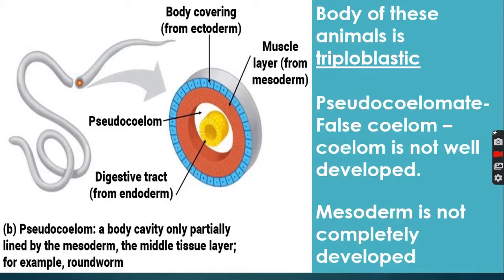Their body is triploblastic — we can see three germ layers: ectoderm, endoderm, and mesoderm. But the special feature here is that the mesoderm is not well developed. Therefore they have a pseudocoelom, which is a false coelom — meaning the body cavity is not properly developed.